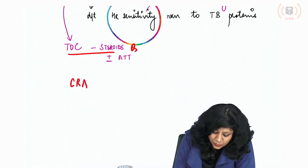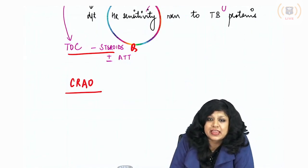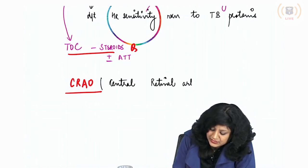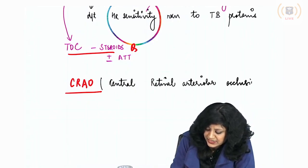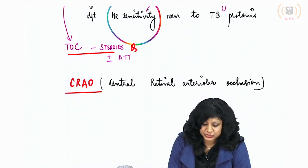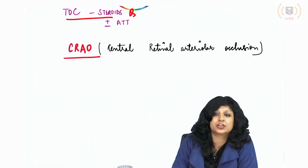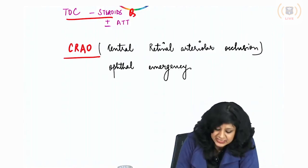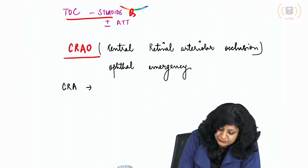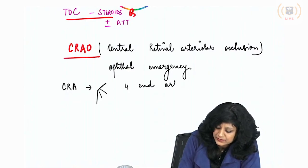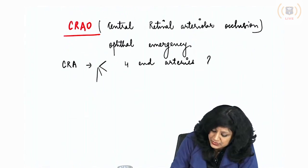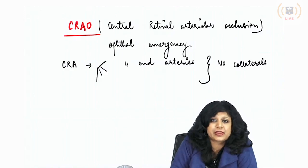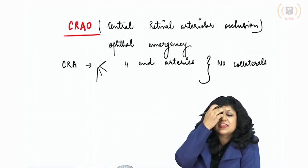Coming to CRAO — central retinal arteriolar occlusion. It is a very important condition and an ophthalmic emergency. It is an emergency because the central retinal artery divides into four end arteries with no collaterals. If there is occlusion, you will not get blood supply, you will not have anastomosis, and that is why this is an emergency condition.